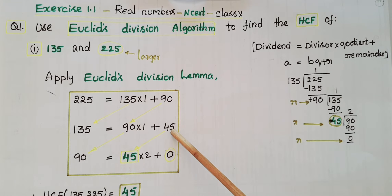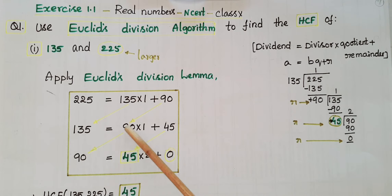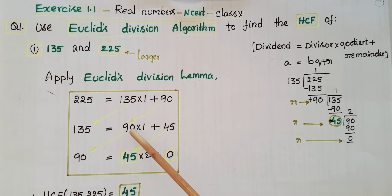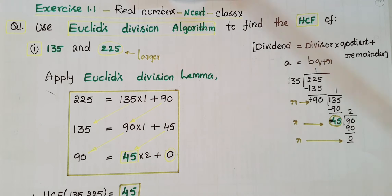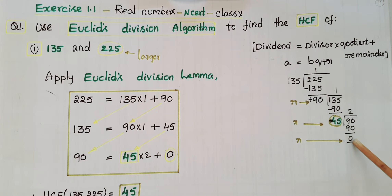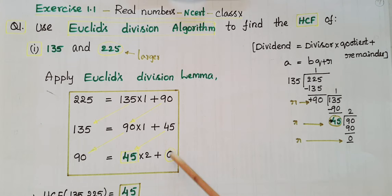Again the remainder is not equal to 0, so apply Euclid's division lemma on 90 and 45. Divide 90 by 45: 90 is equal to 45 into 2, since 45 twos are 90. The remainder is equal to 0, so 45 into 2 plus 0.